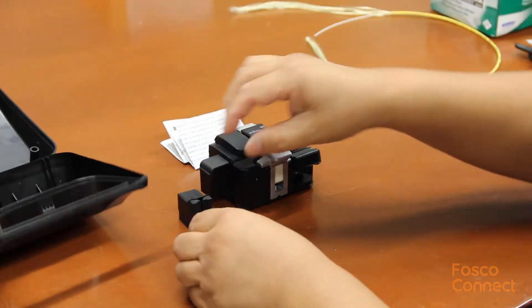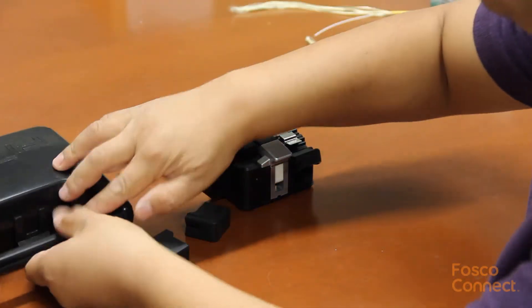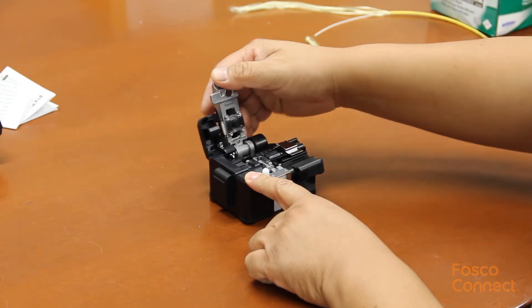There are two extra fiber scrap collector bins. S326A is a one step fiber cleaver.